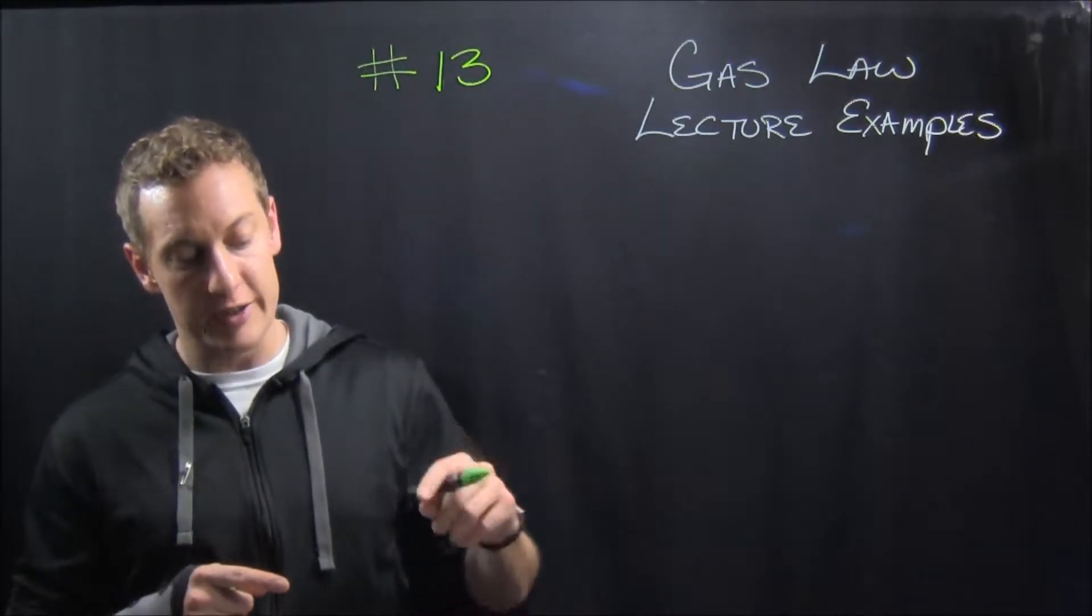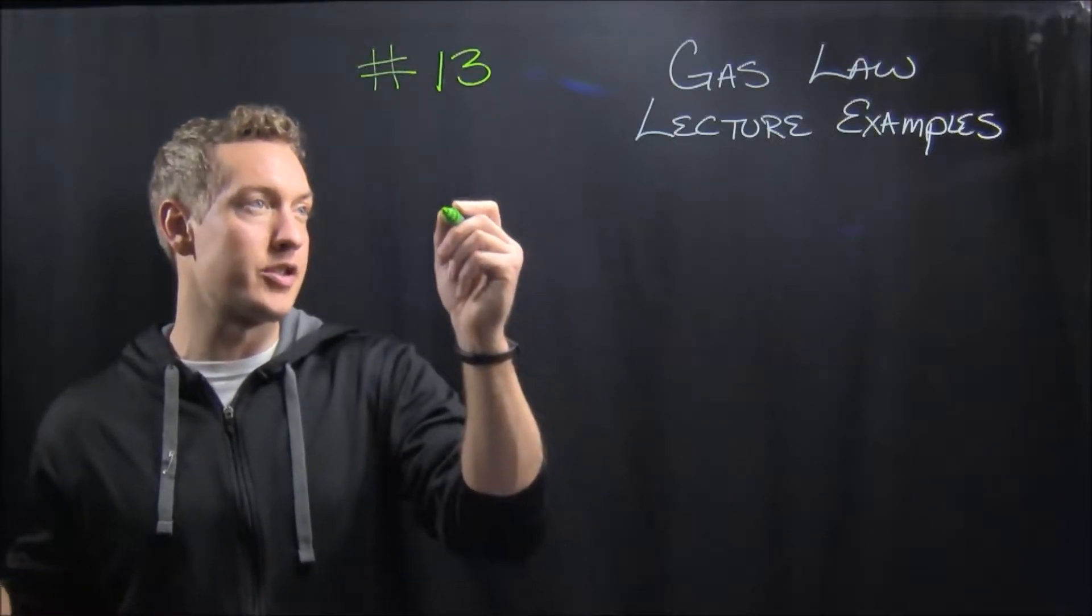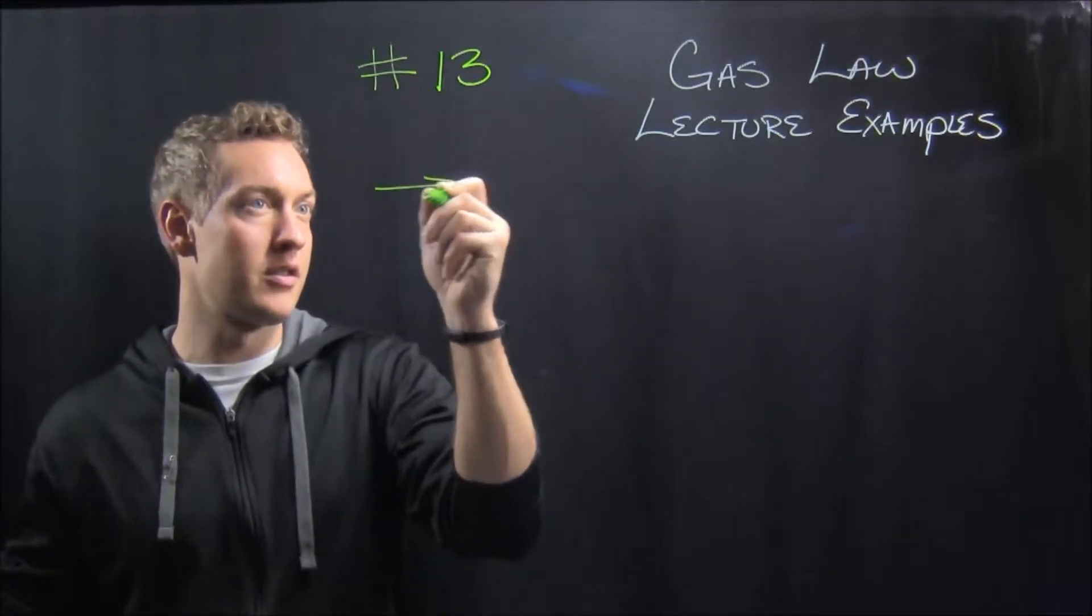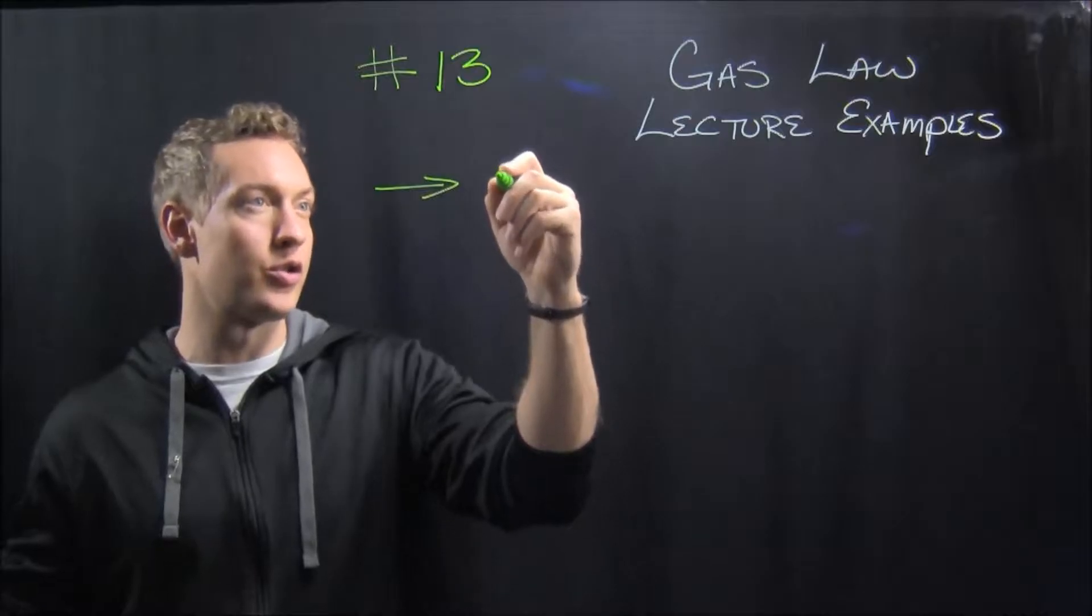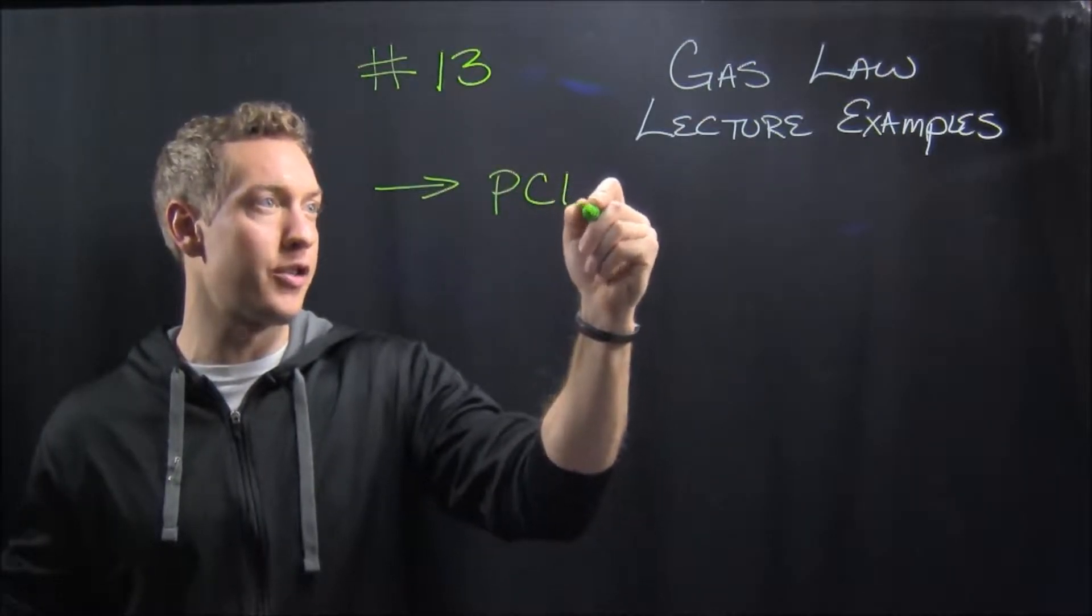phosphorus trichloride is produced, so that means on the product side, you're going to have phosphorus trichloride, PCl3.